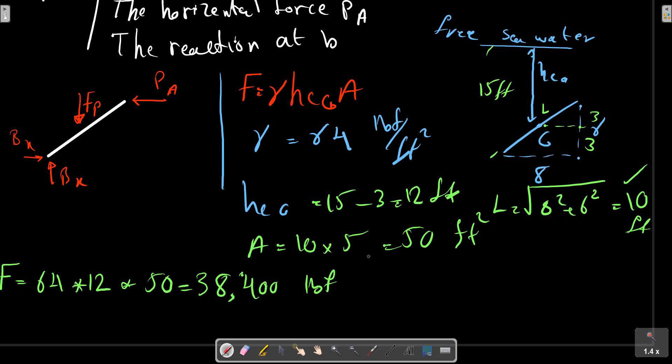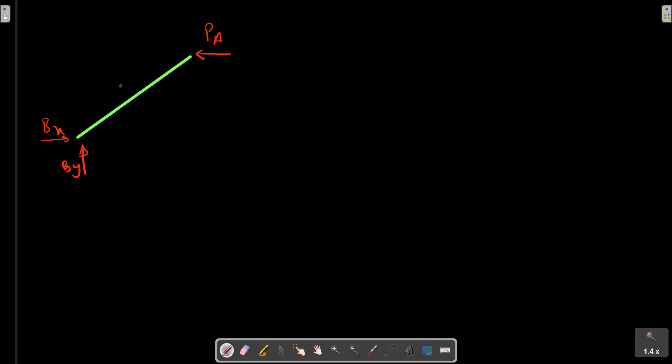So we can now calculate the reaction on A and B. Consider this free body diagram again for more description. We calculate the reaction on B and Pa. We should have the appropriate free body diagram with the external forces. The resultant forces was calculated before as Fp. And now we should calculate the point of application of the force F.